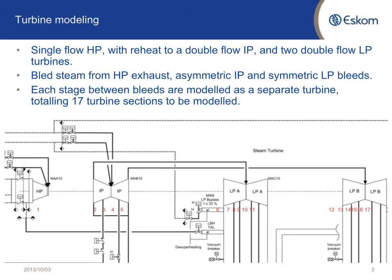This is the complete train of the Madoopi centerline. There's a single HP turbine connected to a double flow IP turbine, and two double flow LP turbines. There's blade steam from the HP turbine exhaust, asymmetric IP and symmetric LP bleeds. I've modeled each stage between the bleeds as a separate turbine because there are different steam flow rates going through each section of the turbine. So in total there are 17 turbines that I connected to one single shaft.